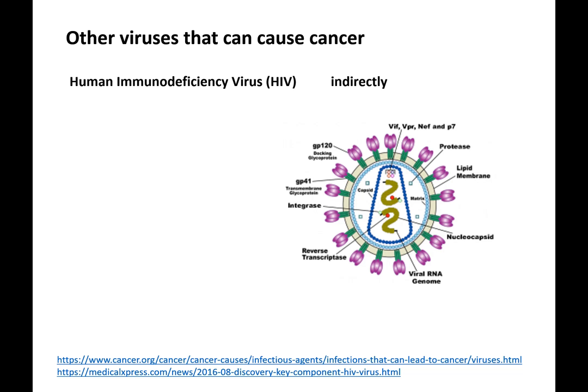That covers the background information on HPV. The two big proteins we'll discuss in the primary literature paper are HPV E6 and E7.